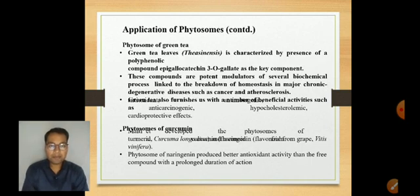Another example is phytosome of green tea. Green tea leaves are characterized by the presence of a polyphenolic compound—epigallocatechin 3-O-gallate—as the key component. These compounds are potent modulators of several biochemical processes linked to the breakdown of homeostasis and major chronic degenerative diseases such as cancer and atherosclerosis.